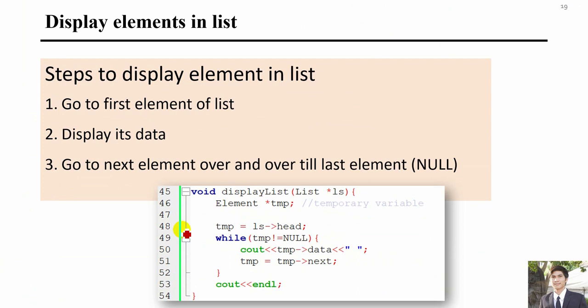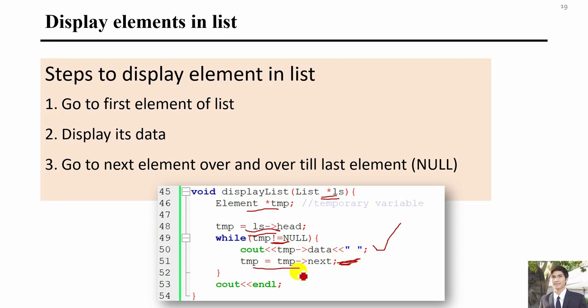To access and display data in the list, we start from the head. We create a temporary pointer tmp set to ls->head, then loop while tmp is not nil — since the last element points to nil. Inside the loop, we display the data and move forward with tmp = tmp->next, traversing each element from head to the end.